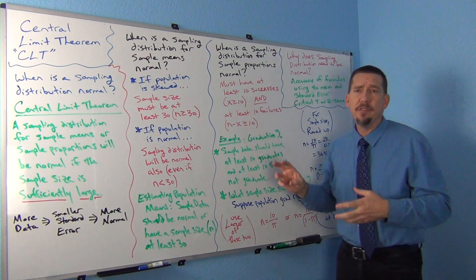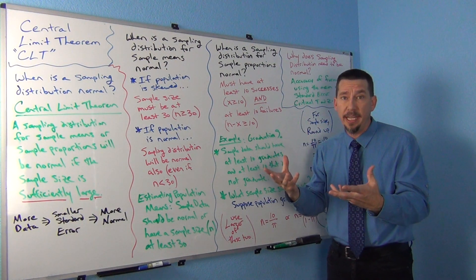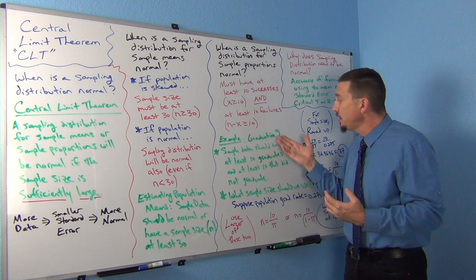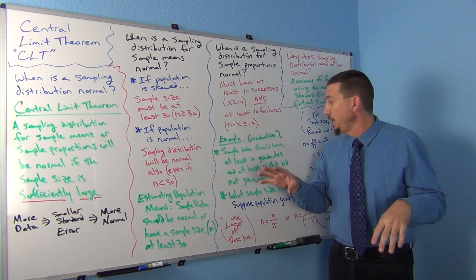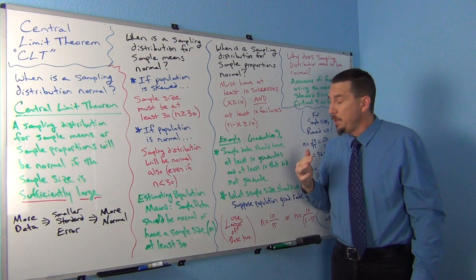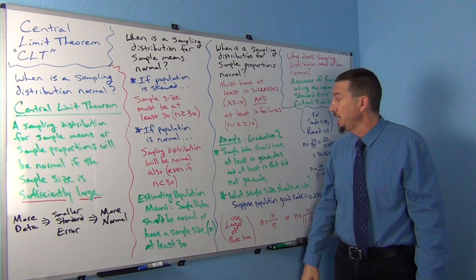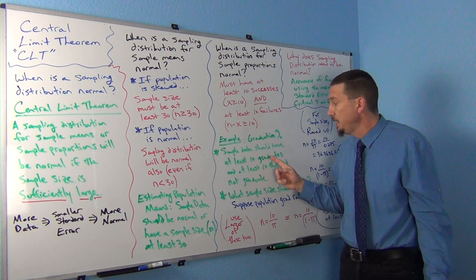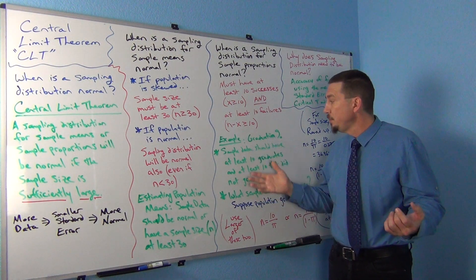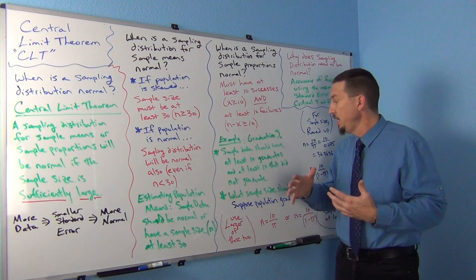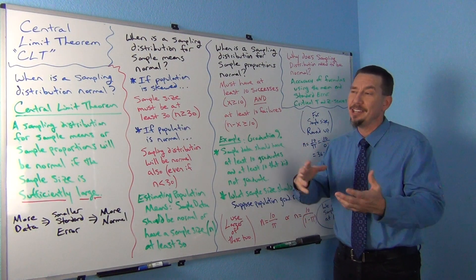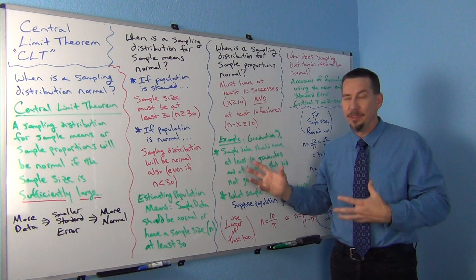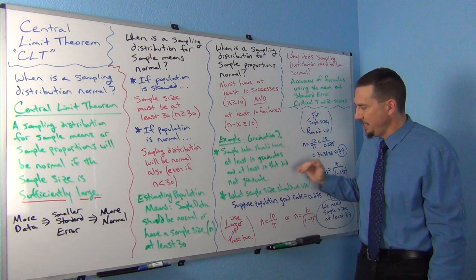So in general, if you've already collected data or you're looking at a random sample, just check: are there 10 successes and 10 failures? For example, with graduation data, check whether there are at least 10 people who graduated and at least 10 who did not. That's the 10 successes, 10 failures rule — you need 10 or more of each, and honestly we get uncomfortable when it gets close to 10. We'd love it to be a lot more than 10. So you need at least 10 successes and at least 10 failures.